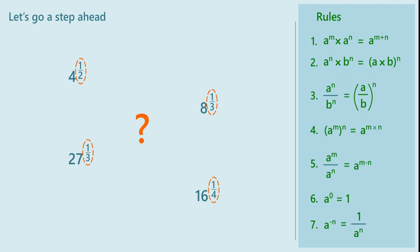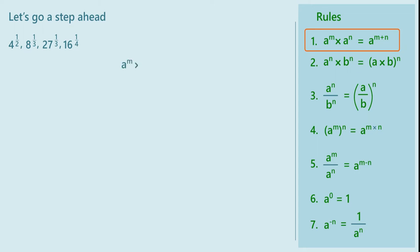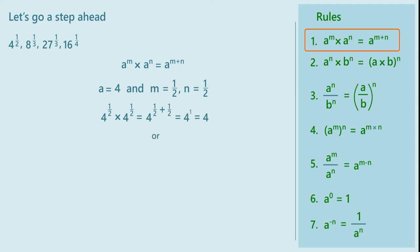What meaning should we give to 4 raised to half? Let us try to make use of the laws of indices that we know already. We know that a raised to m into a raised to n is equal to a raised to m plus n. Applying it for a equal to 4 and m and n both equal to half, it gives 4 raised to half into 4 raised to half equals 4 raised to half plus half, which is 4 raised to 1, that is 4. So 4 raised to half squared gives 4.